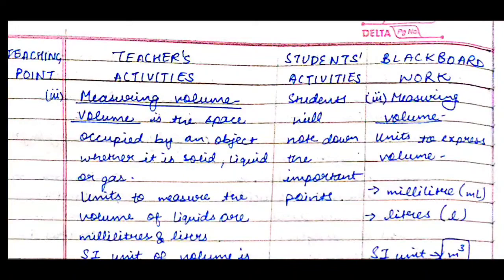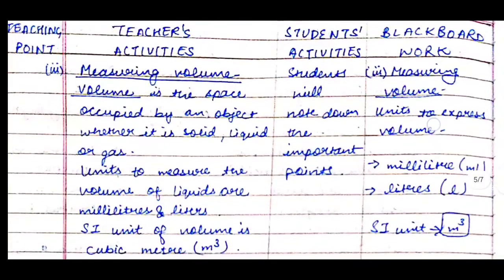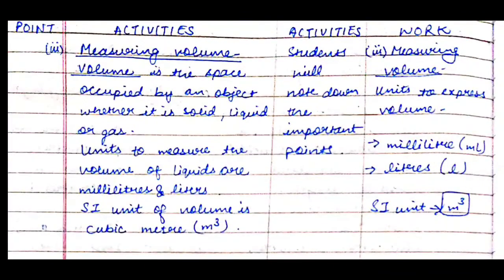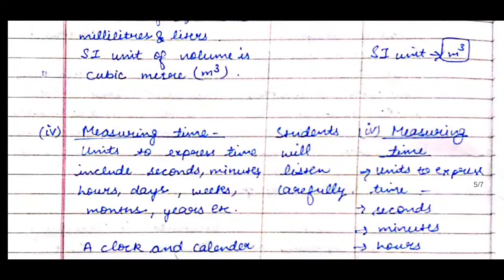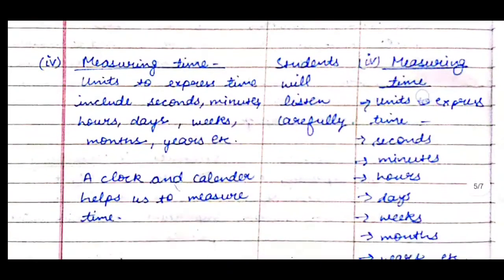Then comes measuring volume. We'll first explain what volume means, since students at this stage may not know. Volume is the space occupied by an object, whether solid, liquid, or gas — but here we'll specifically talk about liquids. Units to measure the volume of liquids are milliliter and liter. The SI unit of volume is cubic meter (m³). On the board: 'Measuring volume — units: milliliter, liter; SI unit: cubic meter.'